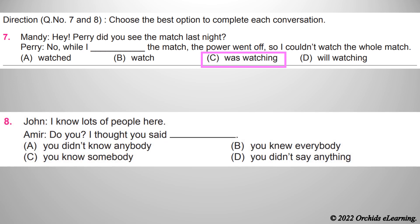Question 8 - John: I know lots of people here. Amir: Do you? I thought you said you didn't know anybody. The correct answer is A - you didn't know anybody.